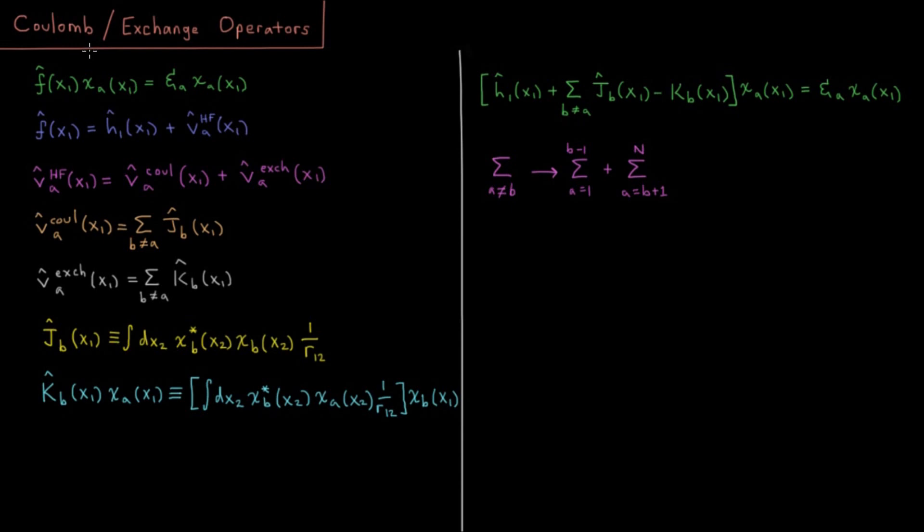We can use this operator to act on our orbitals and our wave function in order to get that energy. So we're going to figure out how we can do that for the case of Coulomb and exchange integrals where we have an operator that we can use to get those components of the energy from two electron operators.